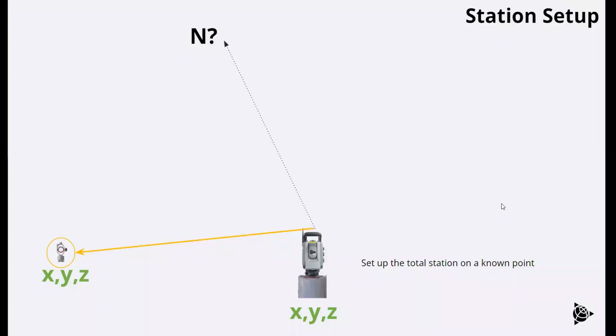The way that it works generally is that we have the total station at a known position. And when we're surveying, we want to find the location of whatever it is we're measuring. So we need to know the location of the total station. That way we have some sort of spatial point that we're starting with.